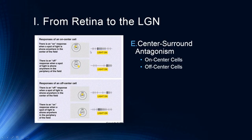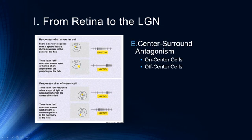For an on-center cell — the annulus structure — if a light is presented in the center, it will increase the firing rate of that neuron, whether it's in the LGN or primary visual cortex. If we present a light only in the surround, it will actually decrease the firing rate — this is an off-surround. Similarly, for off-center cells, presenting a light in the center reduces the firing rate, while presenting light in the on part of the surround increases the firing rate.